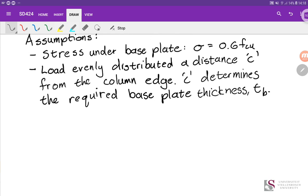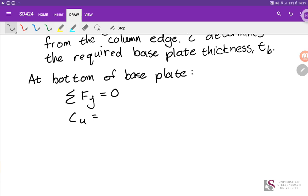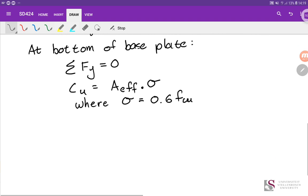Firstly, now we're going to start with taking the sum of forces at the base of the baseplate, at the bottom of baseplate. Sum of forces vertically equals zero. And this is then given us, so our applied force is Cu, and this is resisted by an effective area times by a stress, where the stress is 0.6 times the concrete, the ultimate concrete compressive strength.